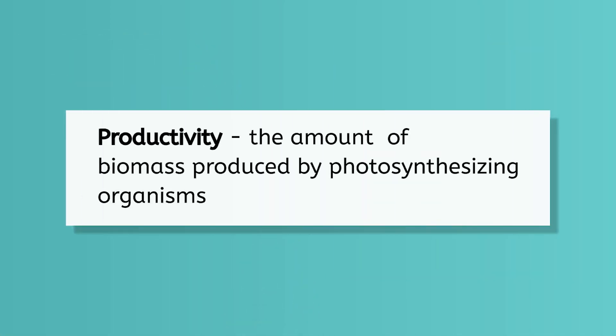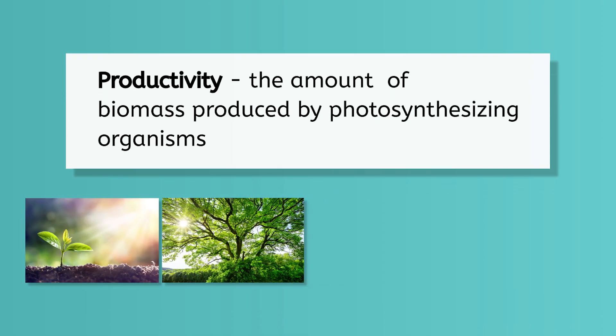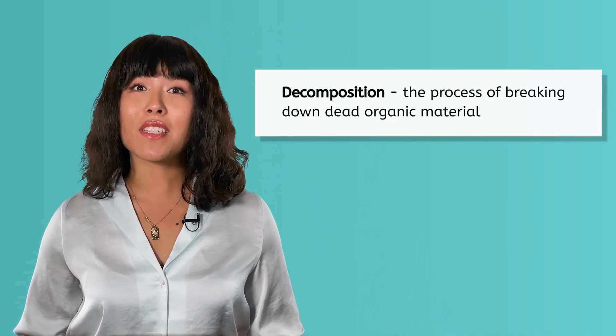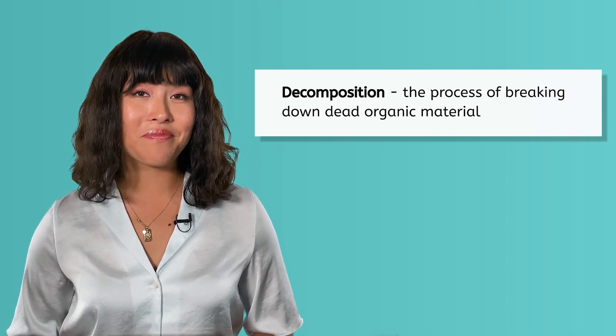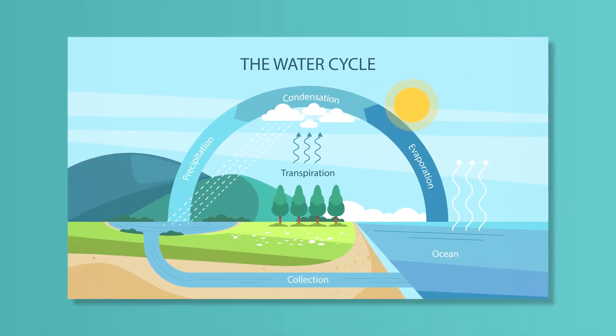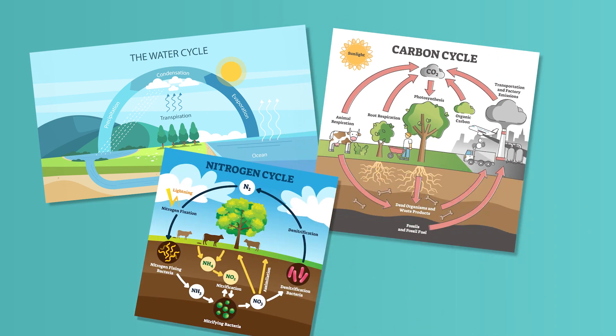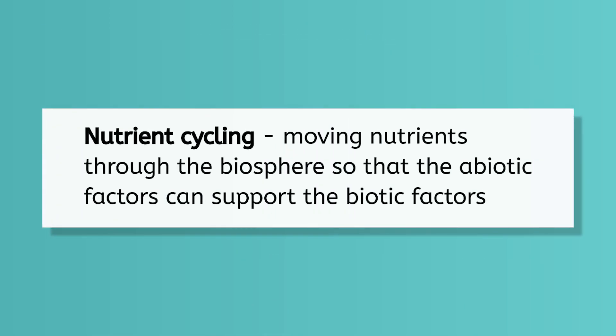Productivity is the amount of biomass produced by photosynthesizing organisms in an ecosystem, including plants, trees, algae, and cyanobacteria. The function of decomposition is the process of breaking down dead organic material by organisms such as bacteria, earthworms, and fungi. This process helps keep soil fertile and supports the nutrient cycles by breaking down organic material into smaller pieces so that other organisms can use those building blocks again. The water cycle, the carbon cycle, and the nitrogen cycle are all examples of nutrient cycling. This important function helps move nutrients through the biosphere so that the abiotic factors can support the biotic factors.